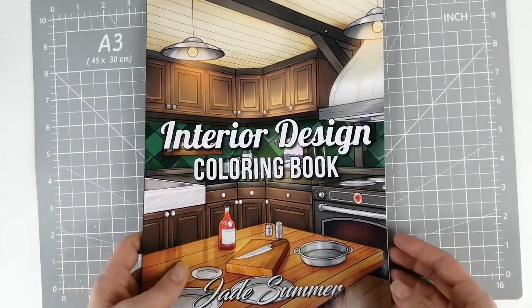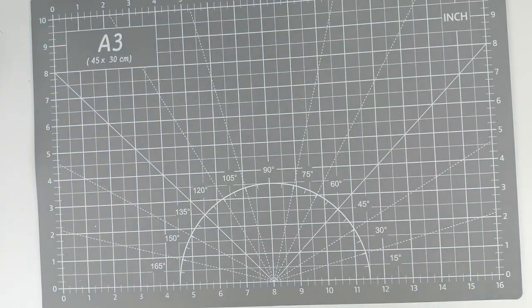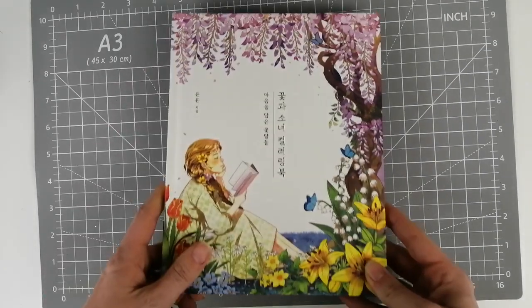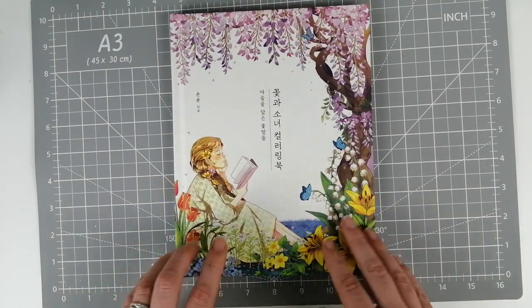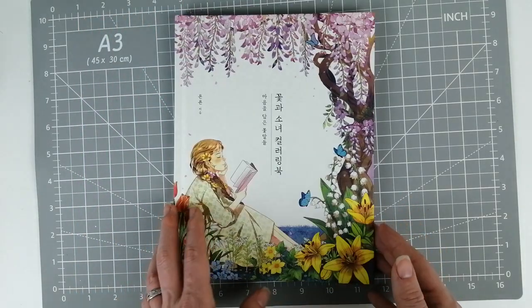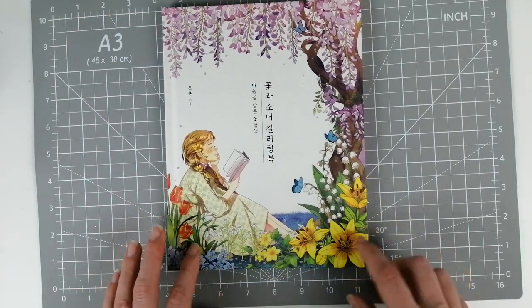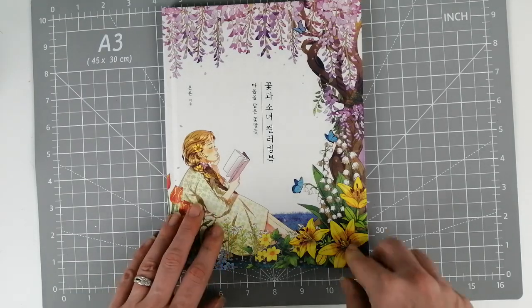Like I say, this phone is just playing up lately. I was watching—who was I watching? I'm always watching someone. I think it was LaBelleAus Coloring, and she got this gorgeous book. It is Flowers and Girls. I got this from Book Depository.